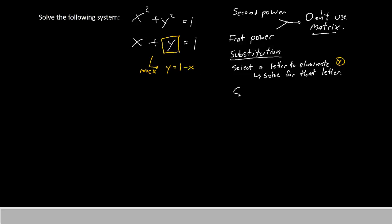Now that we know this, we will go to the first equation and replace y with this expression that we found. In the first equation, we have x squared plus y squared equals 1, but we're going to replace y with a parenthesis. In the parenthesis, we're going to put the 1 minus x. So we have x squared plus 1 minus x, still squared, equals 1.